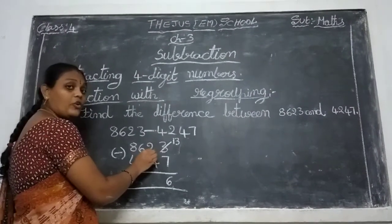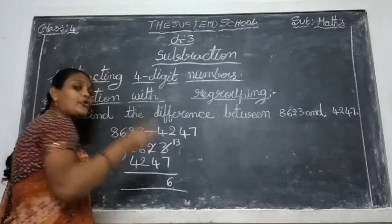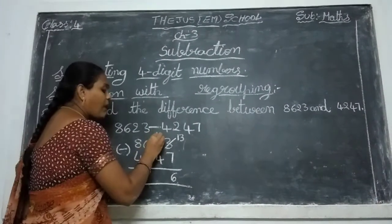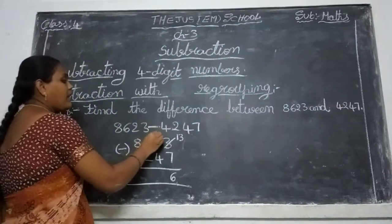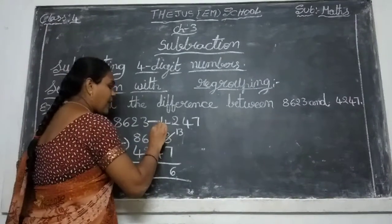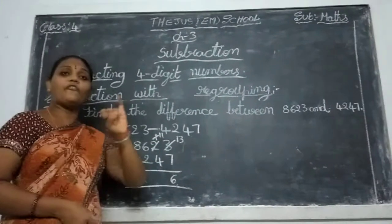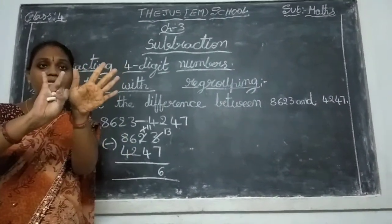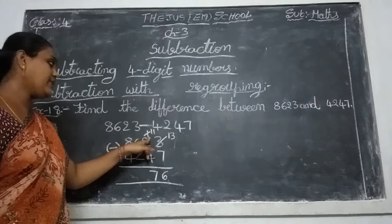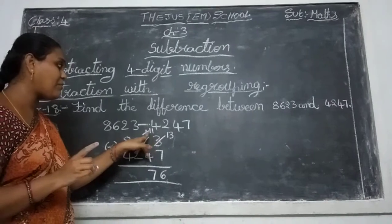Here the given number is 2, but 2 is no longer there because 2 already gave 1 to this 3, so remaining is only 1. Now 1 minus 4 — is it possible? No. So this 1 is taking a borrowing from the 6 next to it. So 1 is converted into 11. Count: 4 after 11 — 5, 6, 7, 8, 9, 10, 11. How many fingers are open? Seven. So write 7 as the answer here.